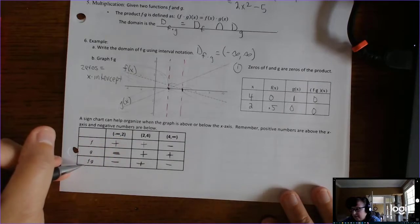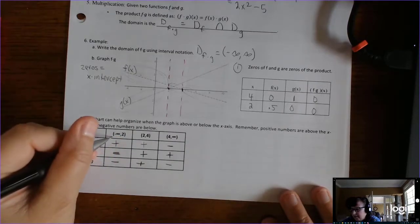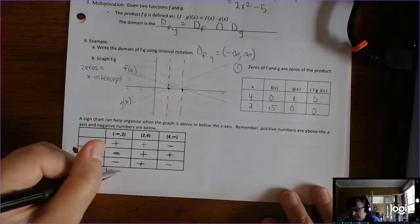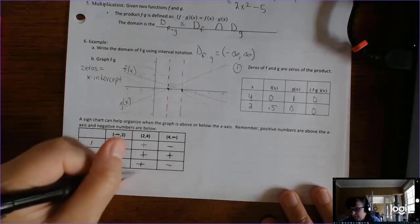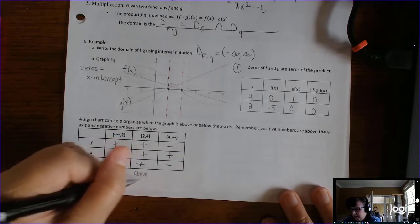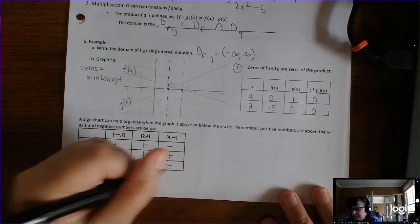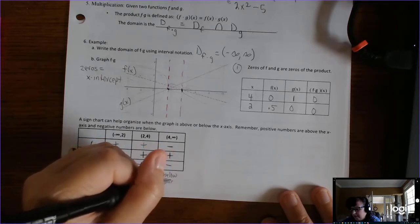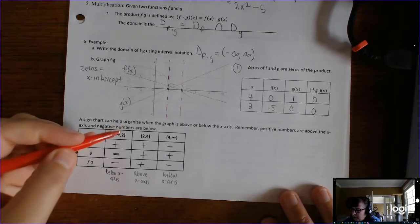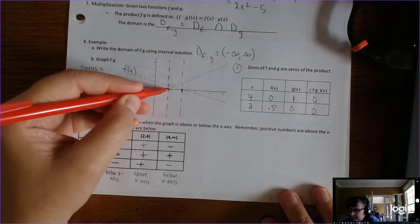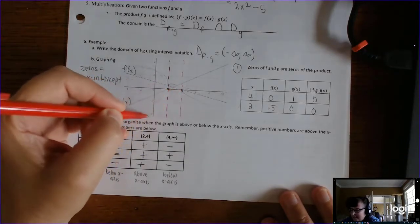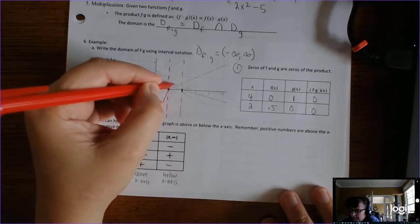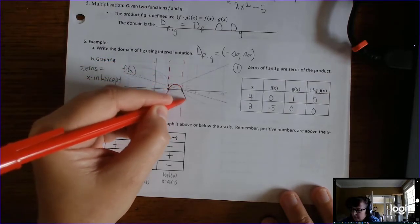So the new function we're creating: from negative infinity to 2, it's negative — below the x-axis. From 2 to 4, it's positive — above the x-axis. And from 4 to infinity, it's negative — below the x-axis. If we graph that, we know the zeros are where it hits the x-axis. Start below, hit the zero at 2, go above between 2 and 4, hit the zero at 4, then go below from 4 to infinity.